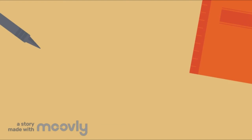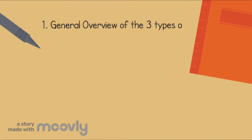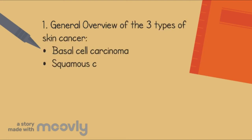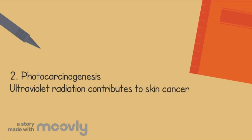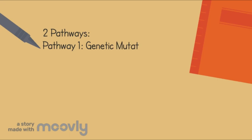We covered a lot of information in today's video, so let's quickly summarize the main points. First, we discussed the three different types of skin cancer: basal cell carcinoma, squamous cell carcinoma, and melanoma. Next, we described the process of photocarcinogenesis, which leads to the occurrence of skin cancer. Finally, we outlined the two pathways that can lead to the development of skin cancer, including genetic mutations and epigenetic alterations.